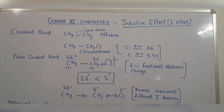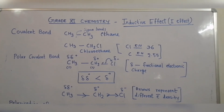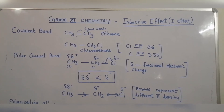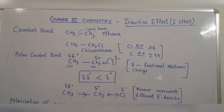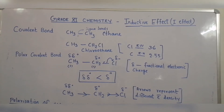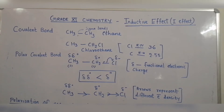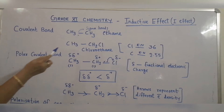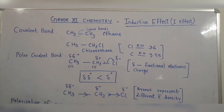Welcome to grade 11 chemistry: inductive effect, or I-effect. A covalent bond is formed by sharing of a pair of electrons between the bonded atoms. For example, in ethane, these represent carbon-carbon sigma bonds.